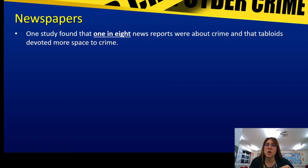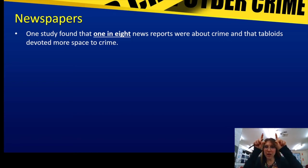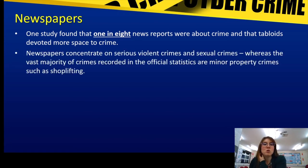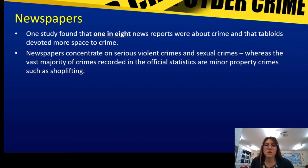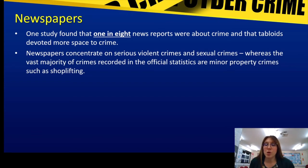One study found that one in eight news reports are about crime, and tabloids devote more space to crime. So in every eight reports, at least one is about a crime. Newspapers concentrate on serious violent crimes and sexual crimes, whereas the vast majority of crimes actually recorded by the official statistics are minor property crimes — shoplifting, things like that. So often crimes are very low level, often unreported. The most common ones are not reported in newspapers, yet newspapers go for the massively sensationalised and emotive cases.